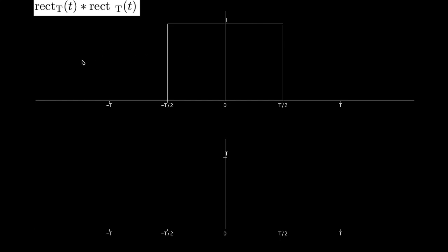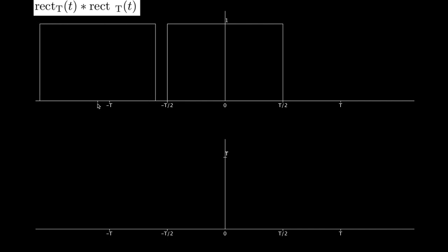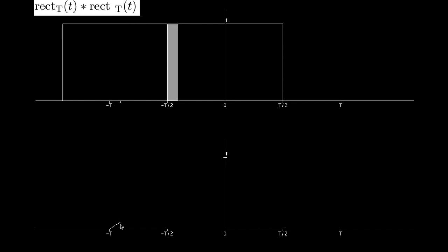To do the convolution graphically, we draw another rectangle and we're going to be shifting that rect function to the right. Here is the center of the rect function, and what we're looking for is the area of overlap between the two rect functions. Right now the two rectangles don't overlap, so the convolution is zero at this point. As I slide it to the right, they start to overlap — shown in light gray — and you can see the value of the convolution at the bottom.